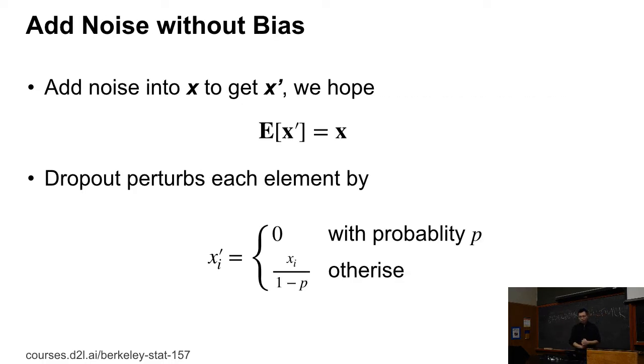Particularly, if X is the output of a particular layer, then dropout gives you X prime, which is such that the expectation of X prime equals X. So we add noise to X prime, but we don't change the expectation at least. You have multiple ways to do that.